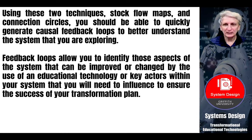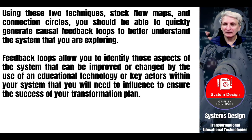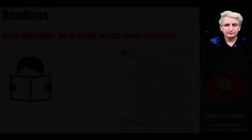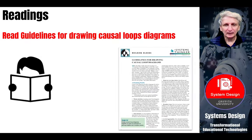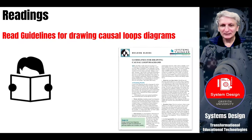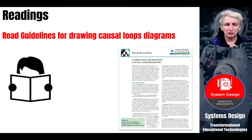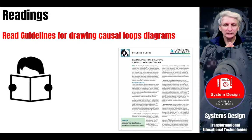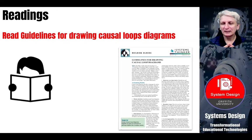We use the two techniques generally in tandem: connection circles to quickly identify the loops, and then stock flow diagrams or maps to expand those out in more detail and see how they interact. Sometimes the loops identified in connection circles can be all over the place, making it hard to represent them and see how they might be distinct and how they influence various other loops. There's another reading on drawing causal loop diagrams in a bit more detail — the first reading covered the actual symbols and how to physically do the diagrams, and now we go into more detail on how to arrange and construct them with more complexity.